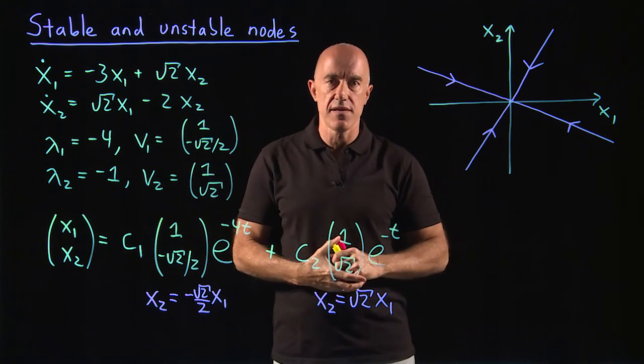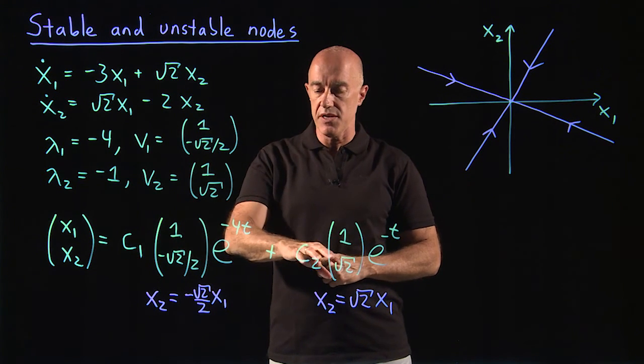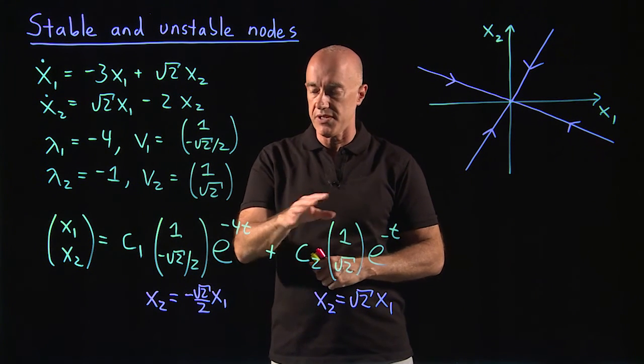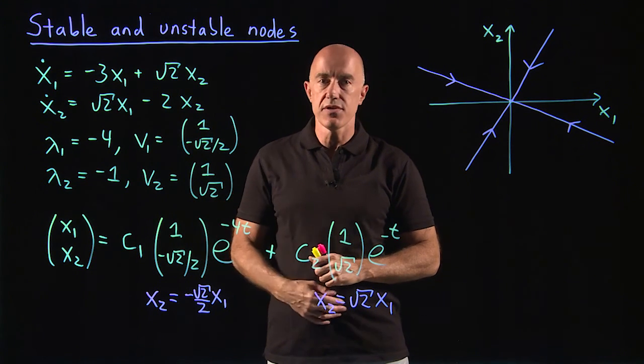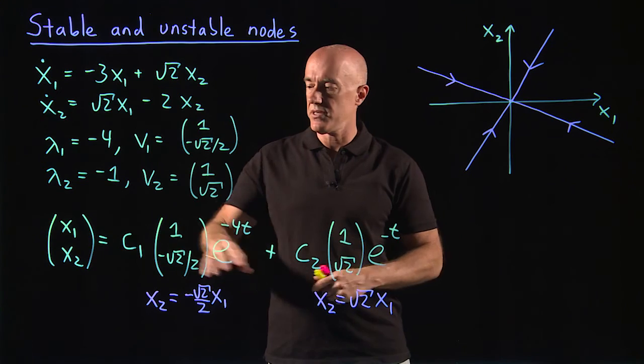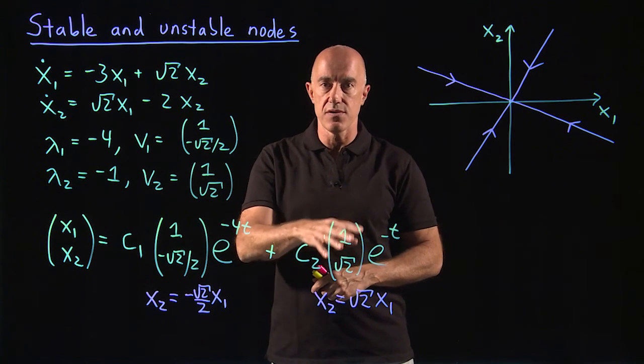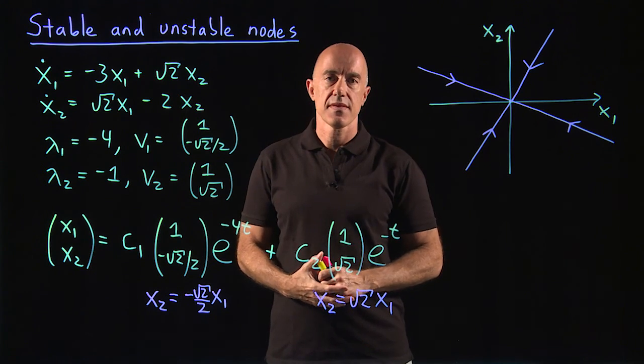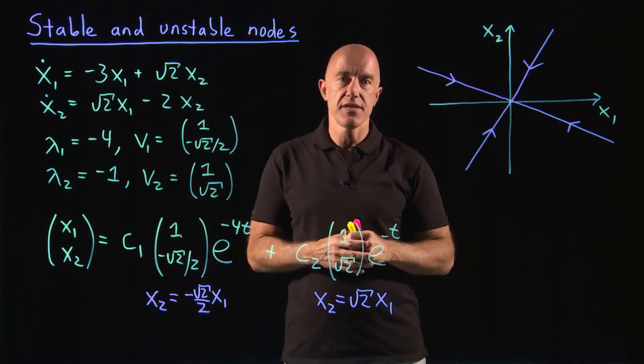The key to drawing the phase portrait is to consider separately initial conditions where c2 equals 0, so that the solution follows v1, or to consider initial conditions such that c1 equals 0, and the solution follows v2. I'm Jeff Chasnoff. Thanks for watching, and I'll see you in the next video.